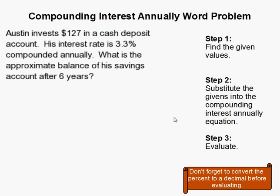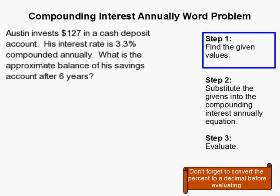Compounding Interest Annually Word Problem. Before we get started, I'll read the problem first. Austin invests $127 in a cash deposit account. His interest rate is 3.3%, compounded annually. What is the approximate balance of his savings after 6 years?